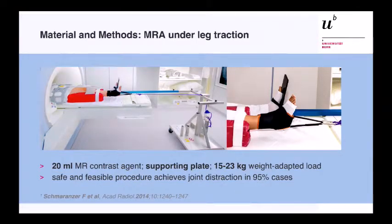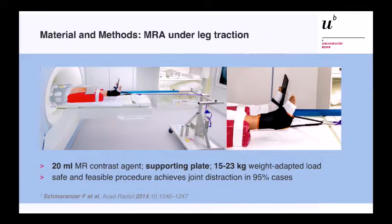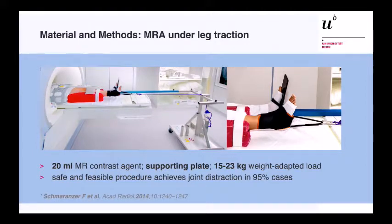This is how traction works. It's a separate device that you can add to any scanner. Ahead of the scan, you inject about 20 milliliters of contrast agent to balloon the hip joint, and on the other side you have a supporting plate. By full extension, this is enough to counterbalance the forces applied on the affected side — about 15 to 23 kilograms — making this a safe and feasible procedure in almost all cases.